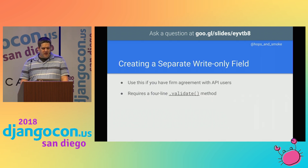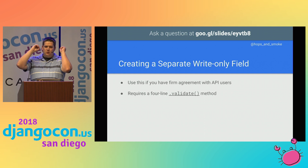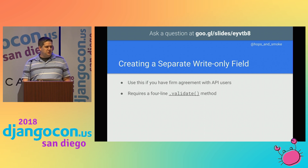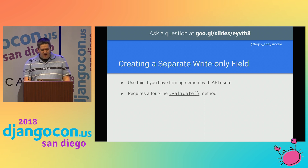Option two is creating a separate write-only field. This requires firm agreement with your API clients that what you receive via a GET is not what you POST or PUT. That's a convention I've seen in a lot of APIs where you could take the result of a GET, put that into a PUT, and it will just work as a null operation — but this breaks that convention. It's not a huge deal, you just have to document it thoroughly and show good examples in the documentation. And then if your users complain about it, point to the docs. You'll also have to write a very small validate method, which I'll show in a moment.